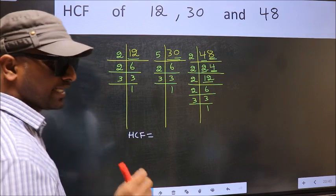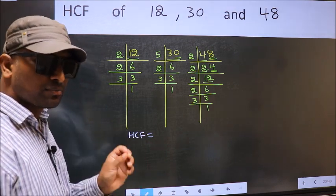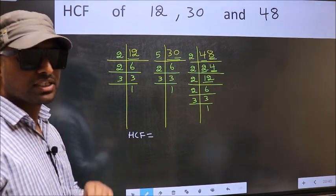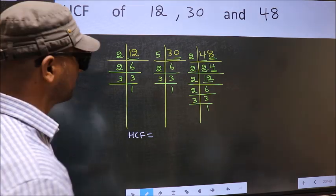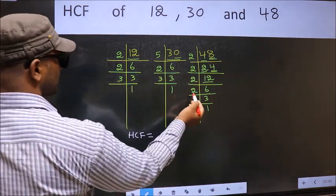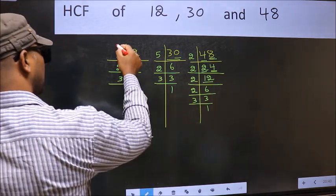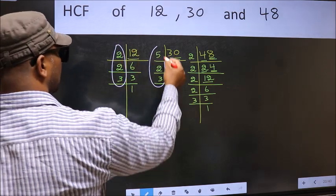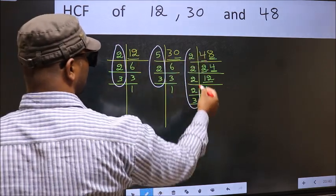HCF is the product of numbers which should be present in these 3 places. That is here and here and also here.